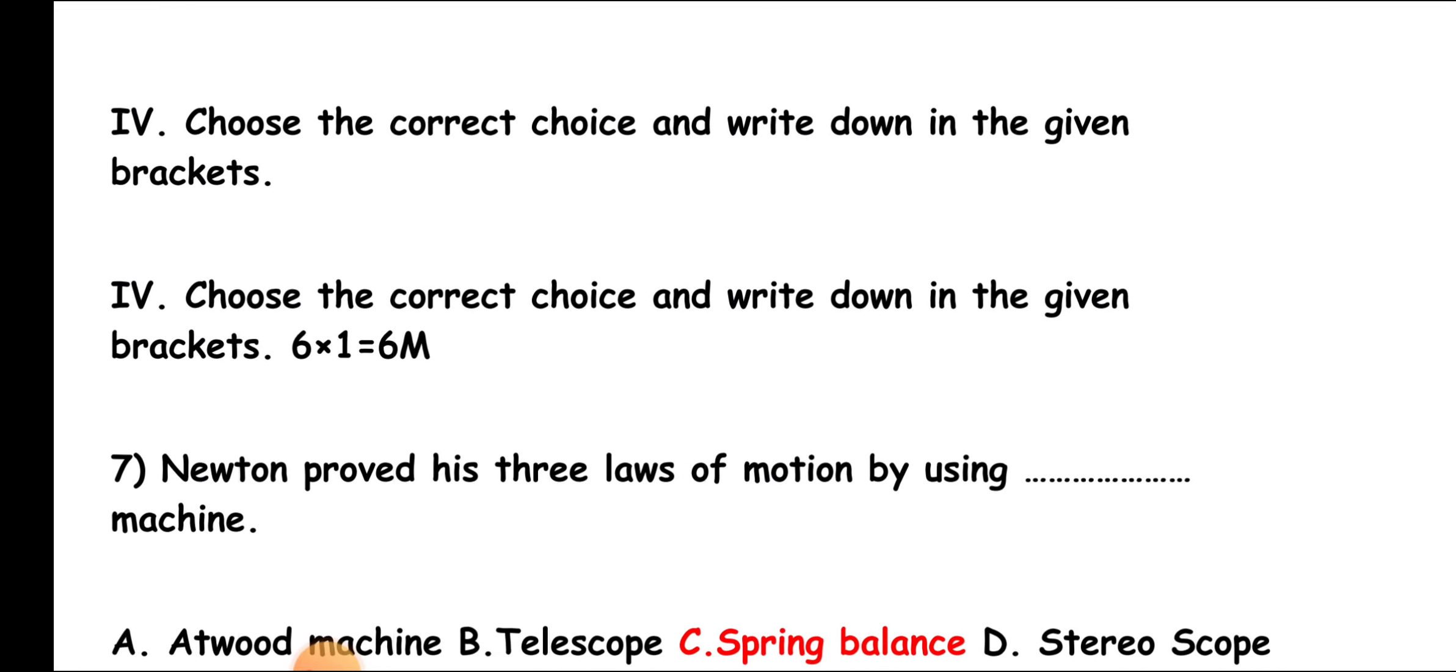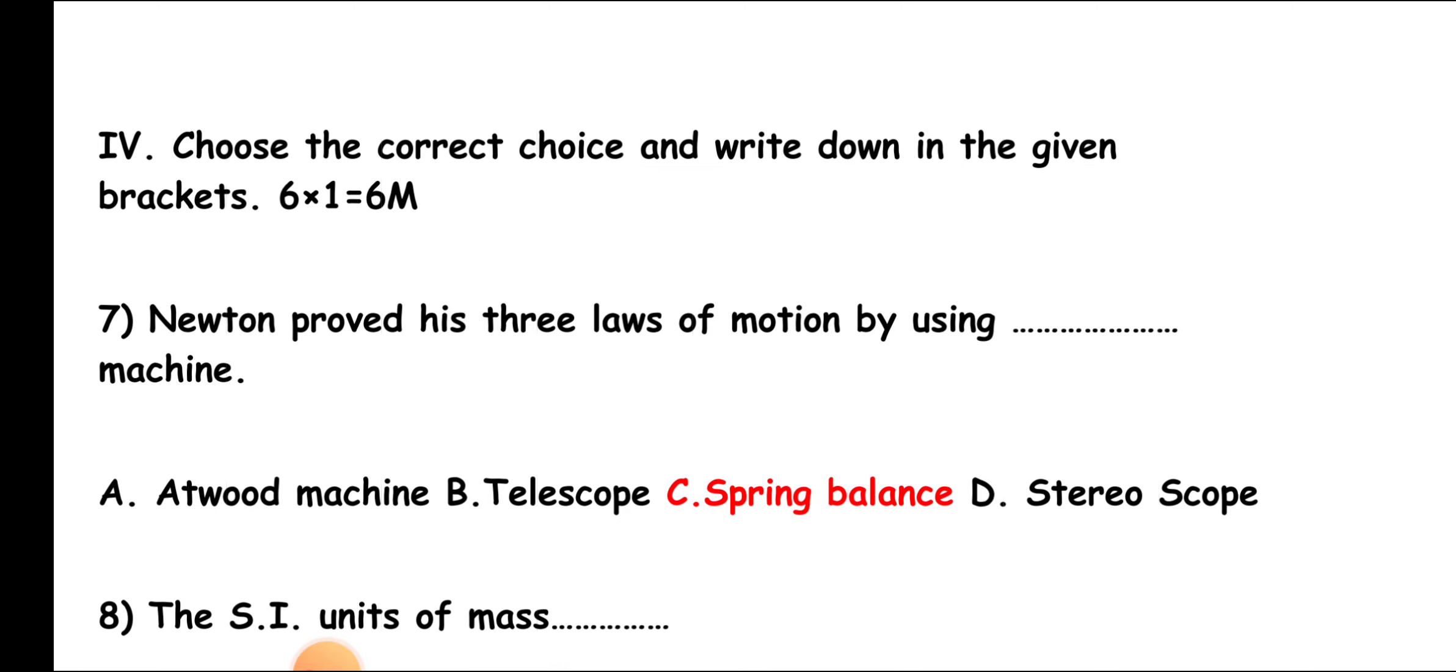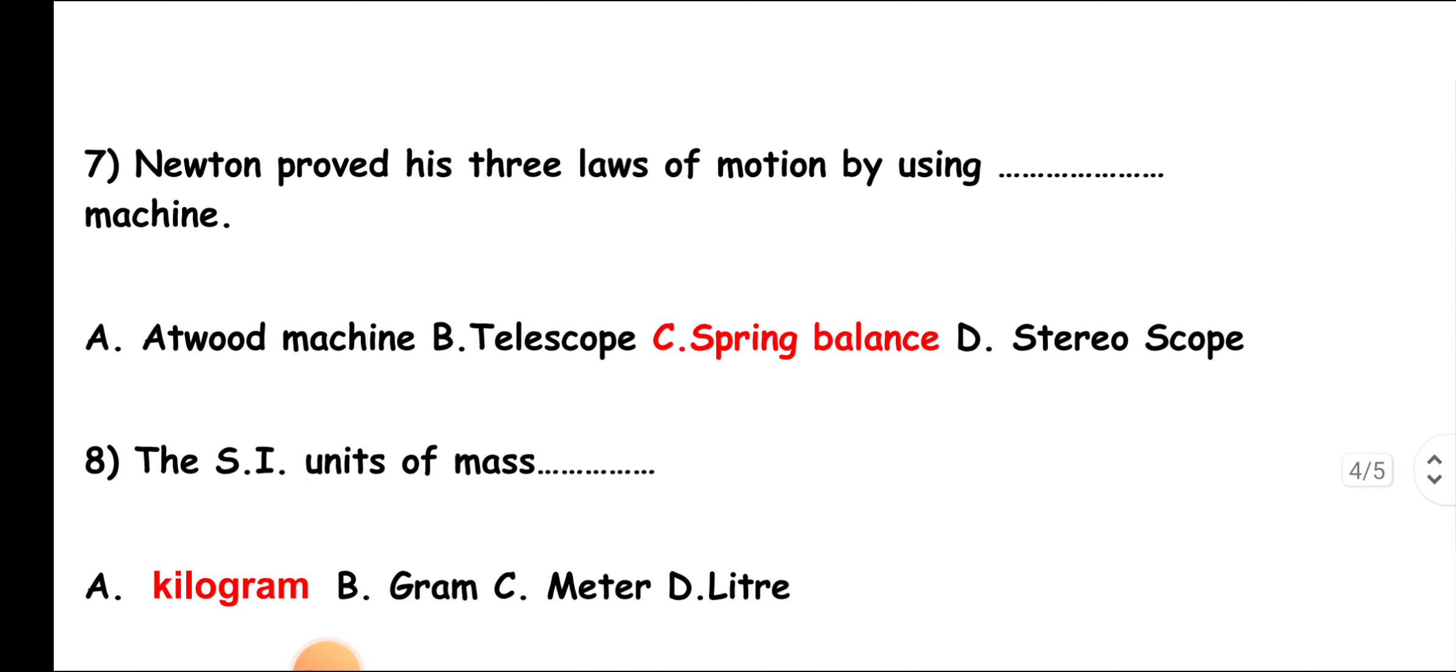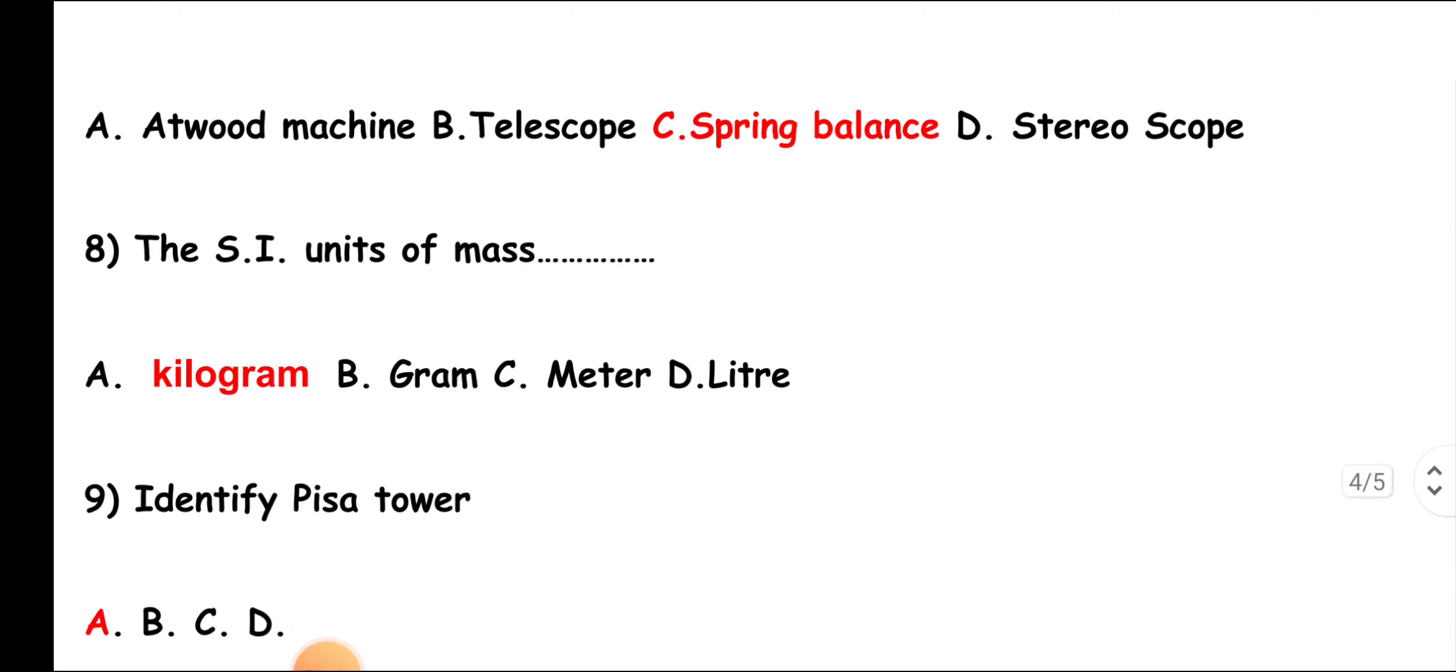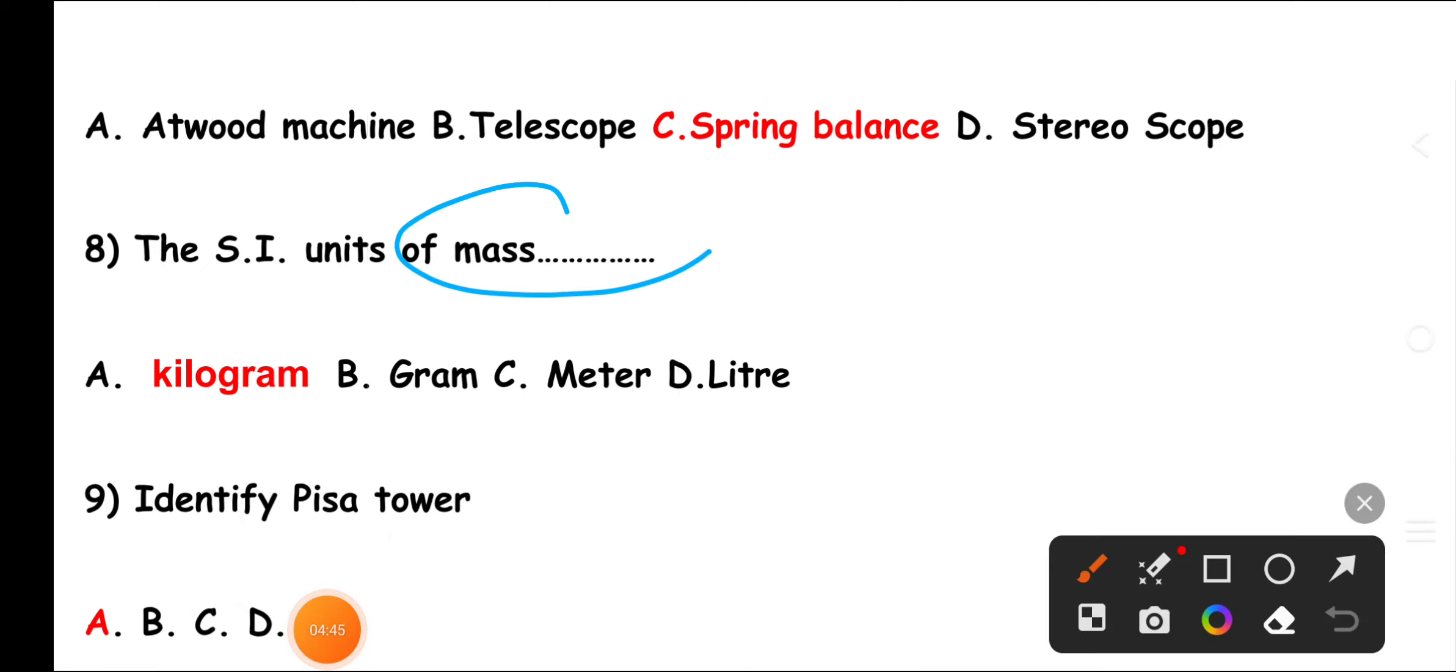Section 4: Choose the correct choice and write down in the given brackets. Six marks. Question 7: Newton proved his three laws of motion by using which machine? Right answer is C, spring balance. Question 8: The SI unit of mass. Right answer is kilogram.